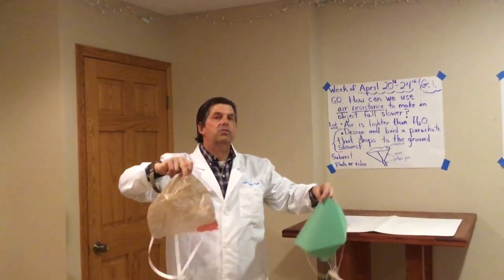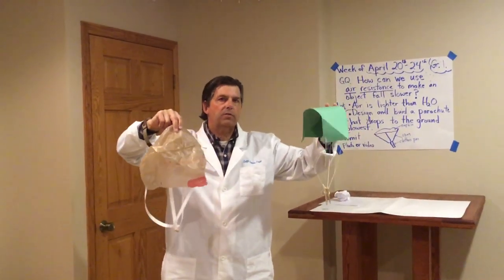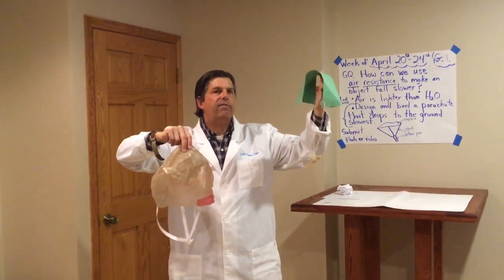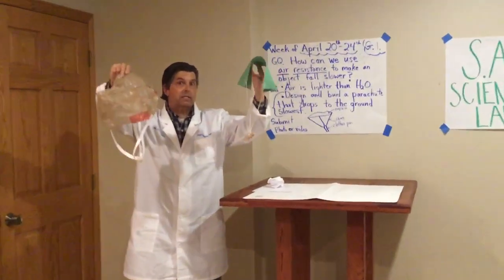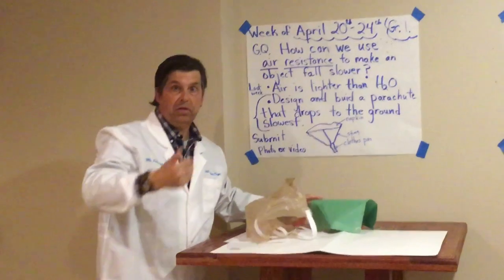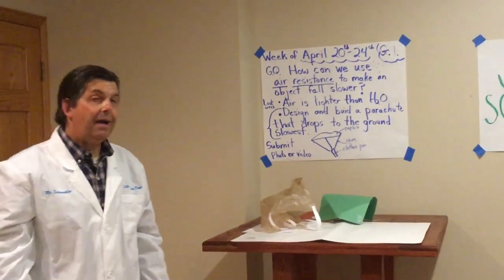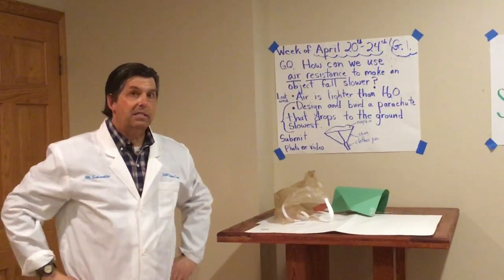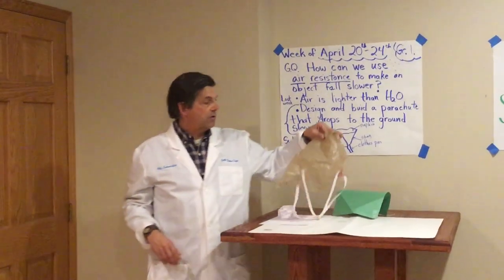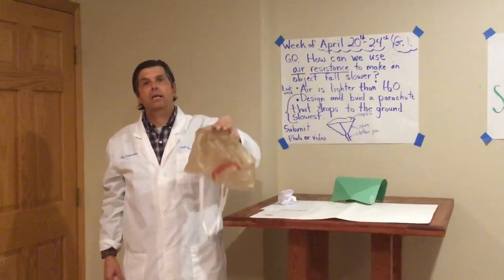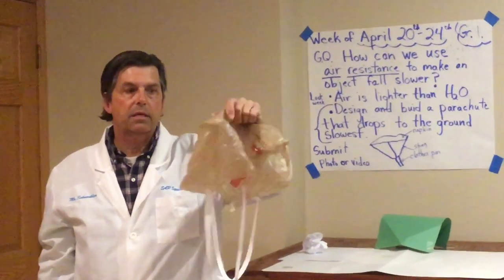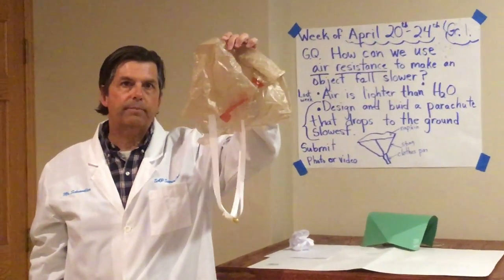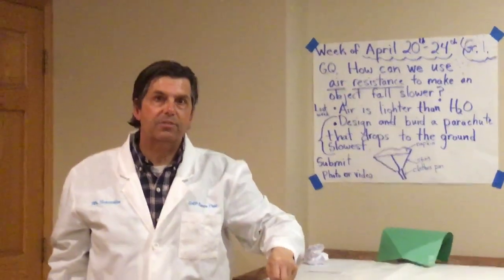Remember, you don't have to have fancy materials. I'd like you to try this out — try to make something fall to the ground slower. Even if you just have a piece of paper, try to fold it so it might fall to the ground slower. Our concept here is air resistance, and we're doing a little engineering: designing, building, testing, and then making it better. I would love to see either a photo of your parachute or a video of you testing it. That's your job for this week — use air resistance to design, build, and test your parachute. I'll look forward to seeing your designs and have a great rest of your week, first graders.